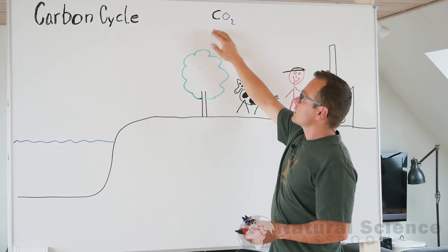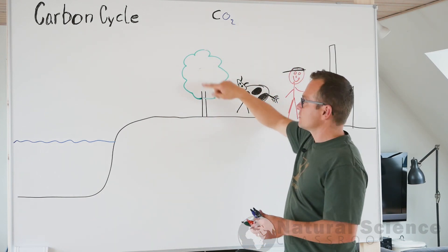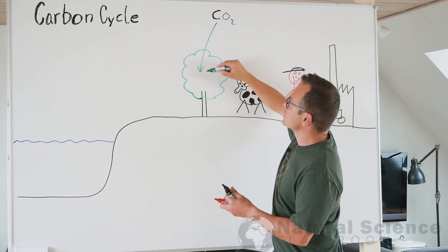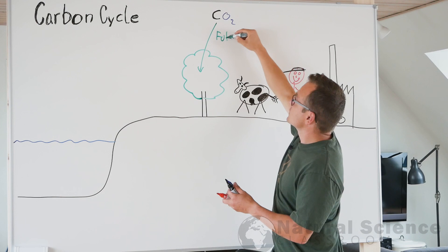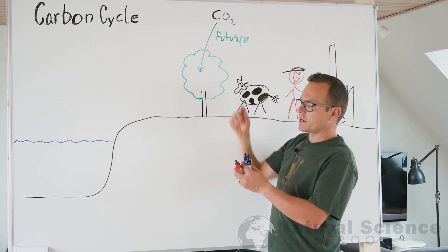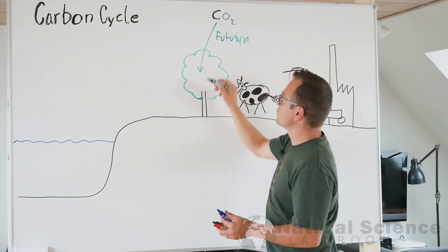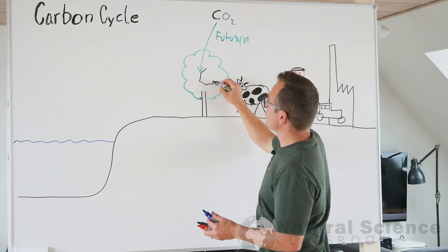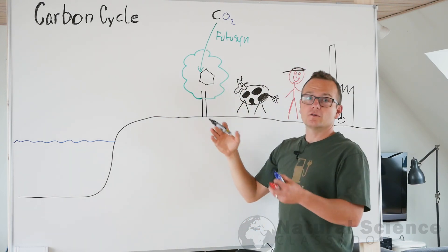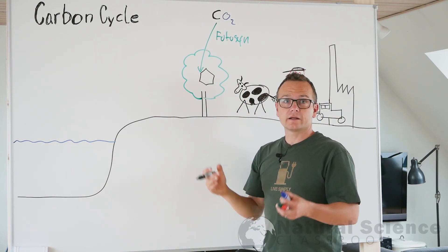Carbon dioxide can be absorbed into vegetation. Here I drew up a tree and it can make photosynthesis. Photosynthesis is transforming the carbon from carbon dioxide to a molecule called glucose. And glucose is a really important molecule in all kinds of living cells.